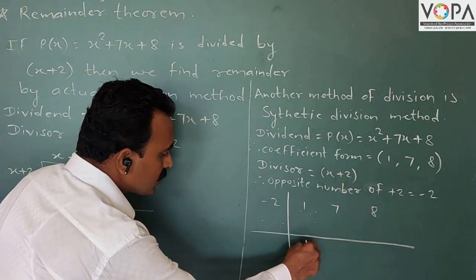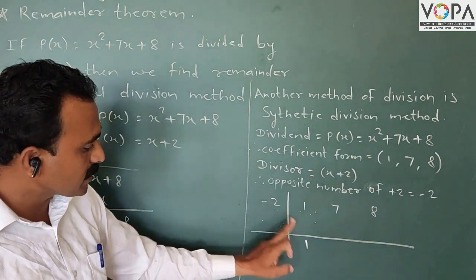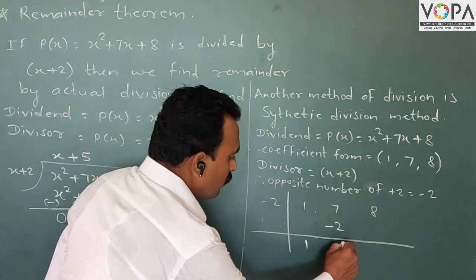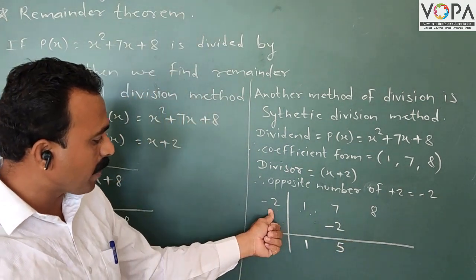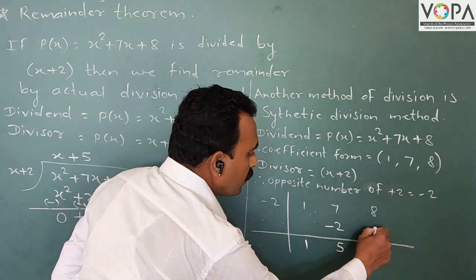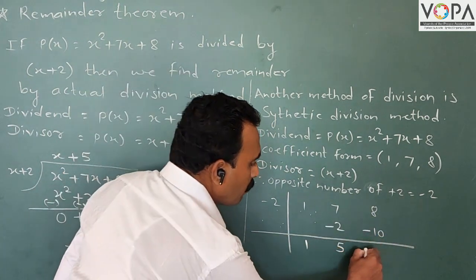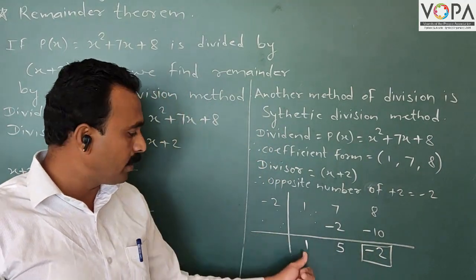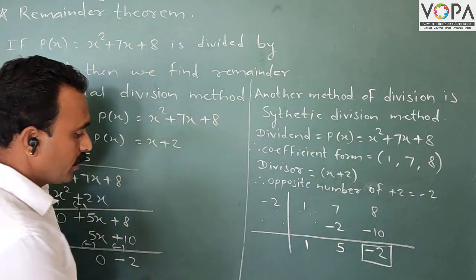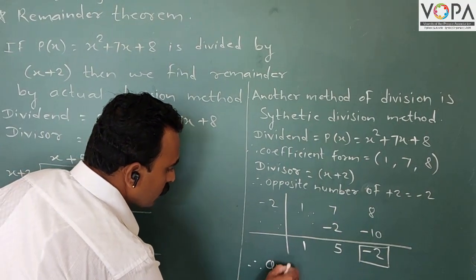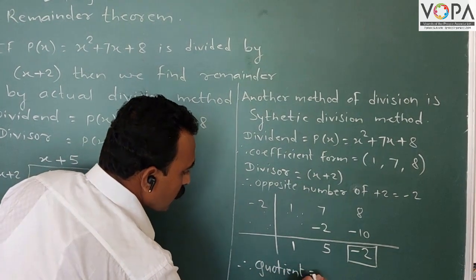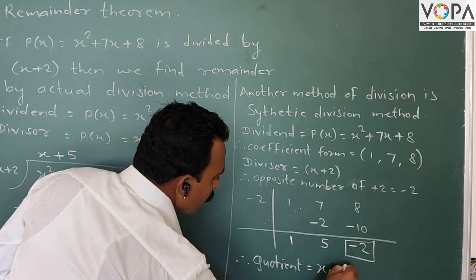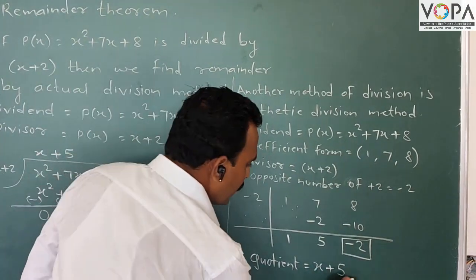The first number, 1, is brought down as it is. Then minus 2 multiplied by 1 gives minus 2. Then 7 plus (minus 2) gives 5. Next, minus 2 multiplied by 5 gives minus 10. Then 8 plus (minus 10) gives minus 2. Draw a square bracket: minus 2 is the remainder, and 1 and 5 are the coefficients of the quotient. Therefore the quotient is x + 5 and the remainder is minus 2.